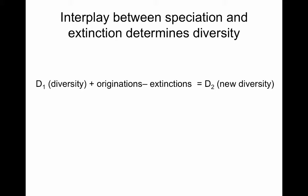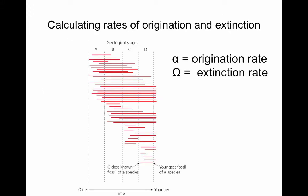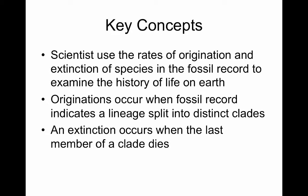Part of understanding macroevolution is understanding the interplay between speciation and extinction, where we can describe diversity as originations minus extinctions, and that gives rise to new diversity. Regions that start with lots of species and have more forming and few extinctions will end up with the most new diversity. This is something we can calculate over time using the fossil record, using alpha as the origination rate and omega as the extinction rate.